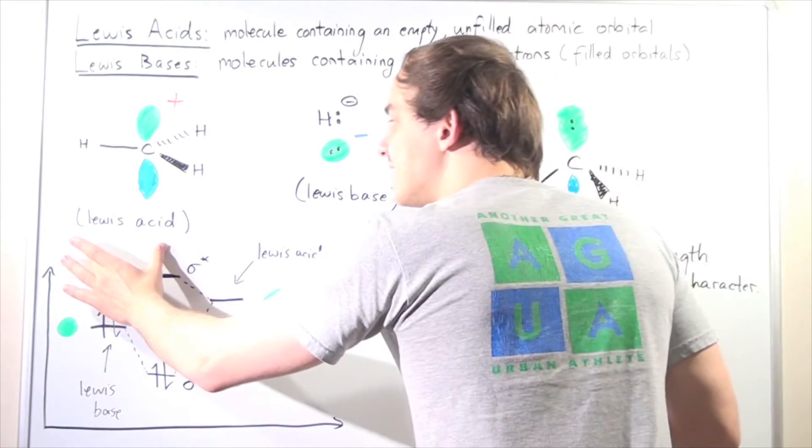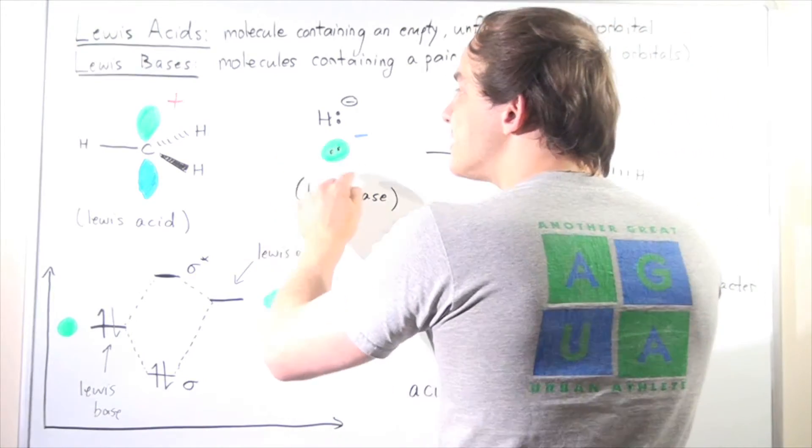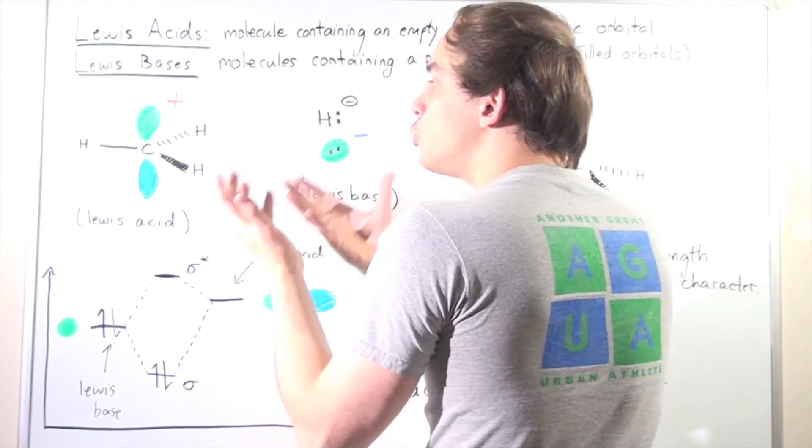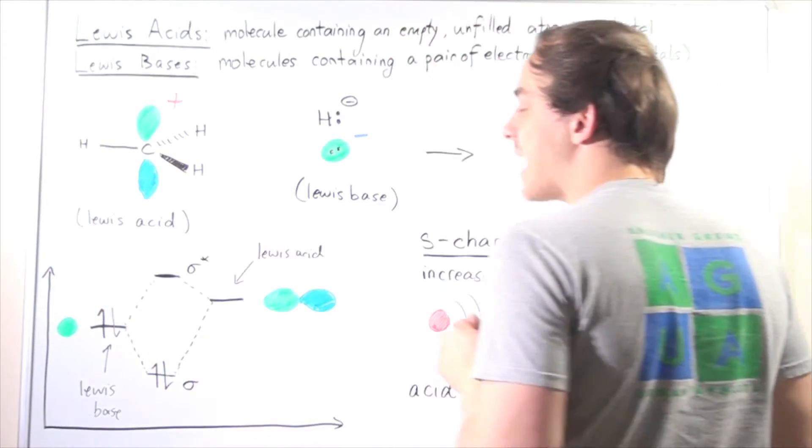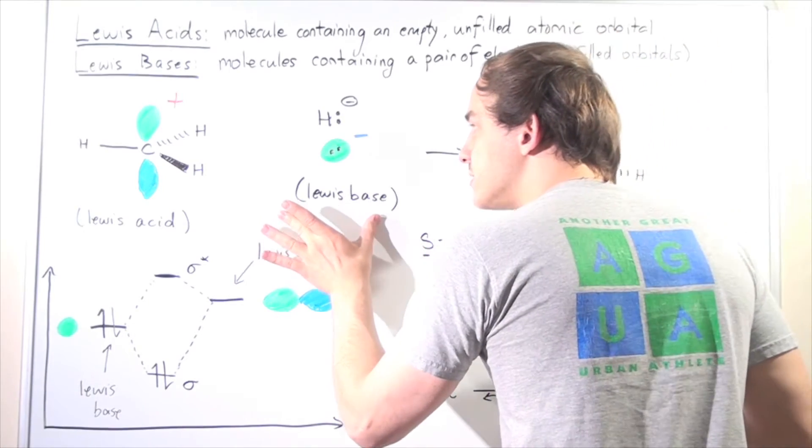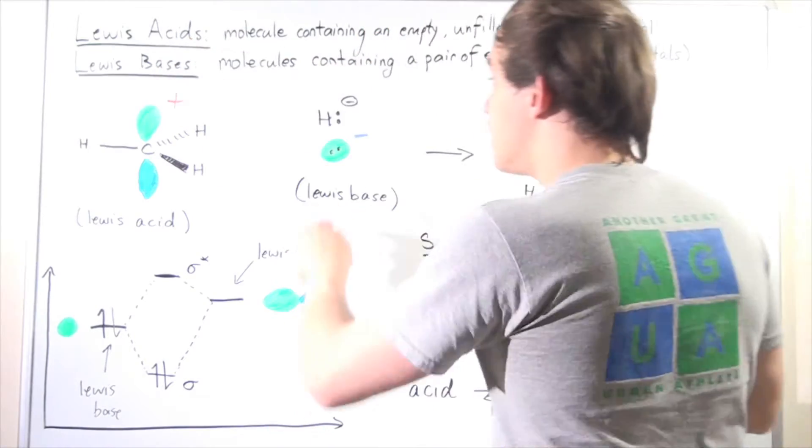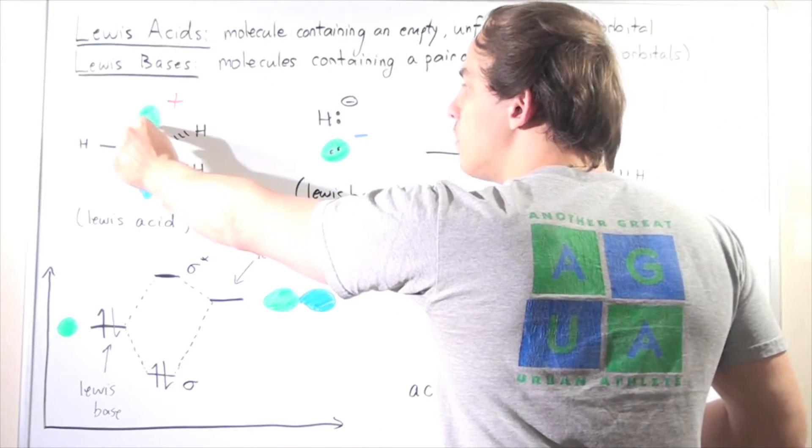When a Lewis acid reacts with a Lewis base, that basically means their atomic orbitals interact, they overlap, producing a bond. In this case, when this Lewis acid interacts with this Lewis base, this 1s interacts with this 2p, these two electrons are donated to this 2p orbital.